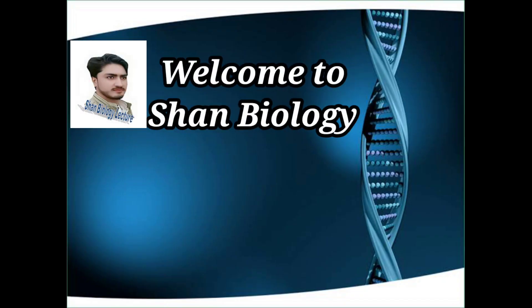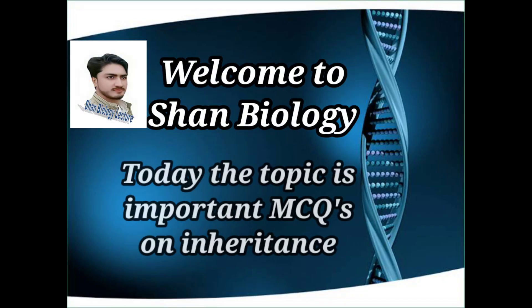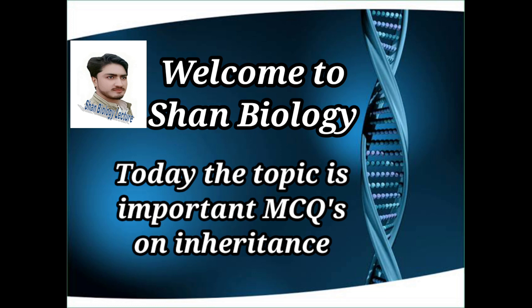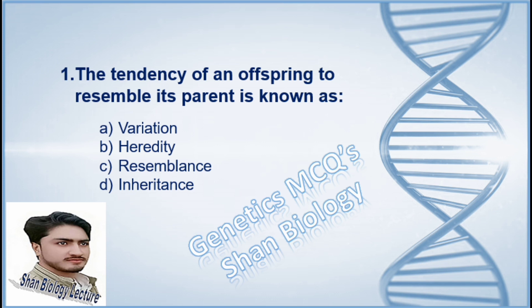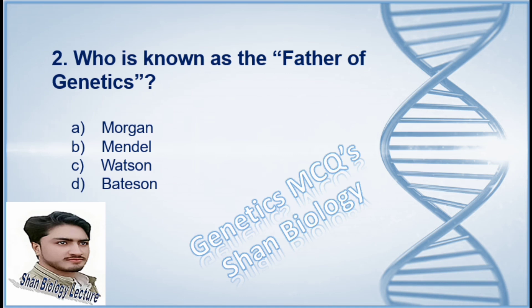Welcome to Sean Biology. Today the topic is important MCQs on inheritance. Question 1: The tendency of an offspring to resemble its parent is known as — option A variation, option B heredity, option C resemblance, option D inheritance. The correct option is B, heredity.